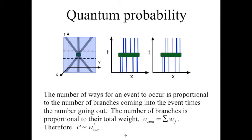The total number of combinations is the product of the number of incoming branches times the number of outgoing branches. Counting individual branches is difficult, but the number of branches will be proportional to the total weight of those branches, which is equal to W_sum = sum over wj. This is true for both the number of incoming and outgoing branches, and therefore the probability of this particular recombination event is proportional to W_sum squared.